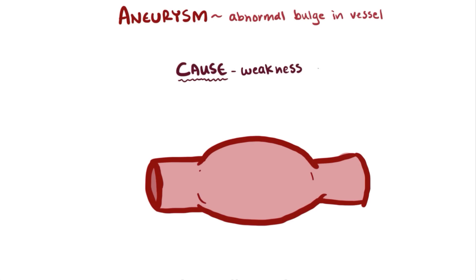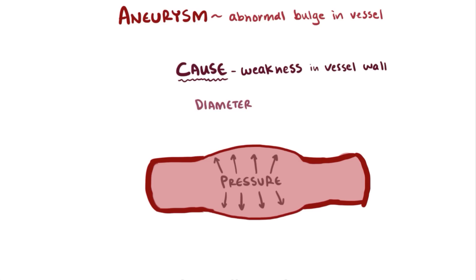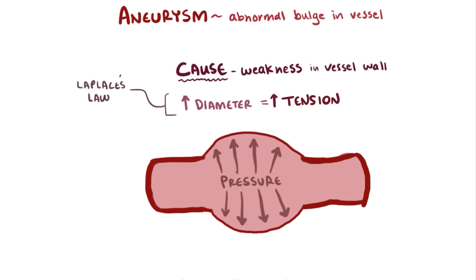Aneurysms are caused by a weakness in the blood vessel wall, so really anything that causes the wall to weaken can cause an aneurysm. When a blood vessel wall weakens, it struggles to contain the pressure of the blood pushing against the walls, so the diameter of the blood vessel lumen increases. On top of this, pressure tension on the blood vessel walls increases as the diameter of the lumen increases thanks to Laplace's law, making the aneurysm diameter even bigger and creating a cycle of continuous bulging.